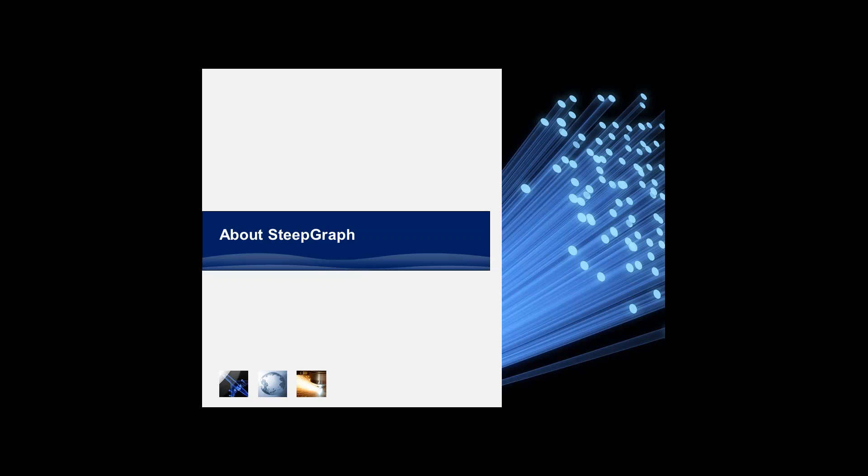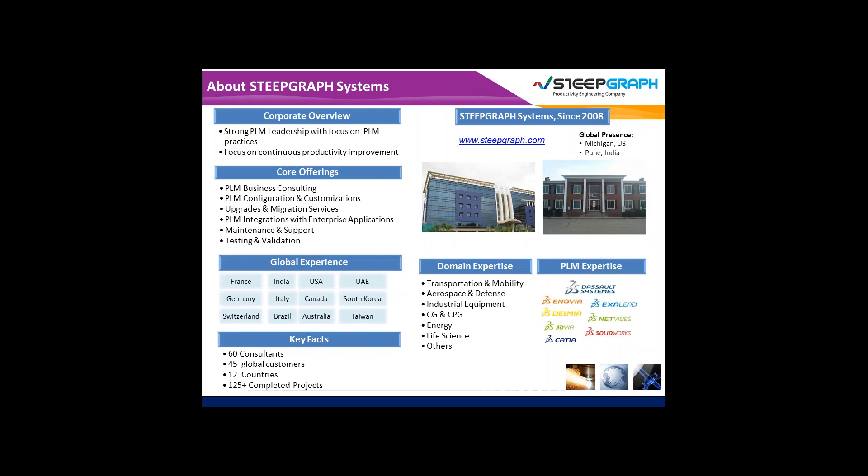A quick introduction about StripGras. StripGras Systems has been operational since 2008 — more than six years — with offices globally in the United States and India. We have our office in Michigan, and our development center and offshore center in Pune, India. StripGras would like to be known in the market as a productivity engineering company, helping companies be more productive with their investments on the PLM platform.